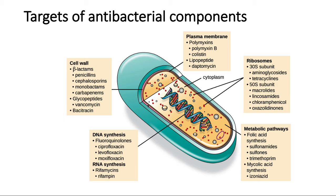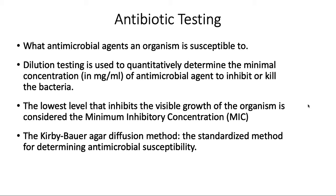So how do we do antibiotic testing? Very often there is an infection and the doctor or health personnel must figure out which antimicrobial agent an organism is susceptible to. For that reason you can use a variety of methods. I'm going to talk briefly about dilution testing, which is a test to figure out what is called the Minimum Inhibitory Concentration (MIC) — the lowest amount of antimicrobial agent necessary to inhibit or kill the bacteria. Then we will talk in more detail about the Kirby-Bauer agar diffusion method, which is a standard way to determine antimicrobial susceptibility.